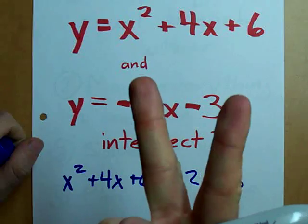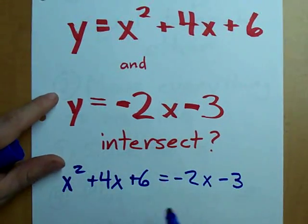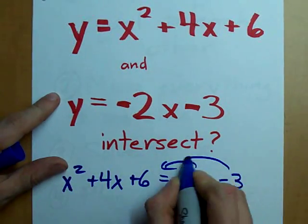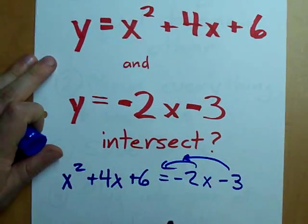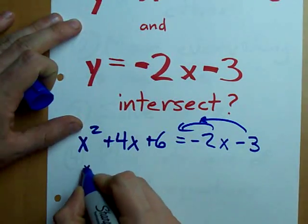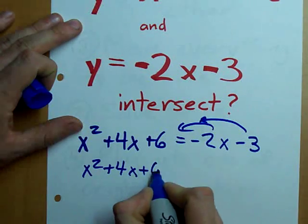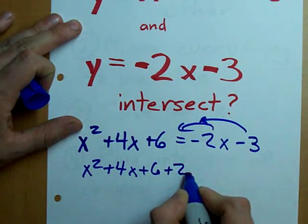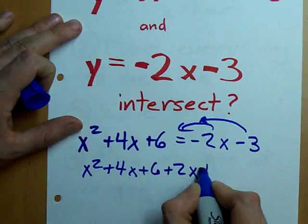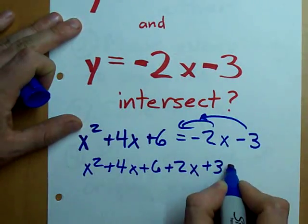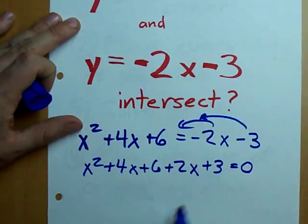Step 2, move everything to one side, like this stuff, the negative 2x and the minus 3. What do we get? x squared plus 4x plus 6. Now, we have plus 2x and plus 3 on that side. We're left with 0 on the right.